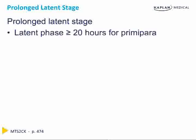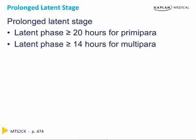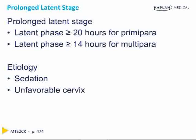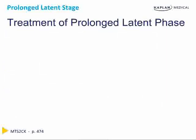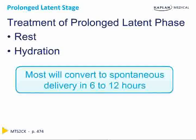The prolonged latent stage is a latent phase greater than 20 hours in first-time moms and greater than 14 hours in moms who have had babies before. The etiology can include sedation, an unfavorable cervix, or uterine dysfunction with irregular or weak contractions. Treatment is conservative and involves rest and hydration. The majority will convert to spontaneous labor and delivery within 6 to 12 hours.